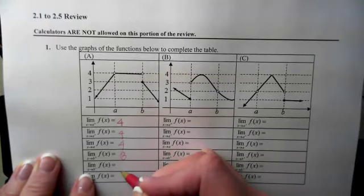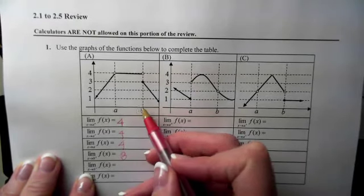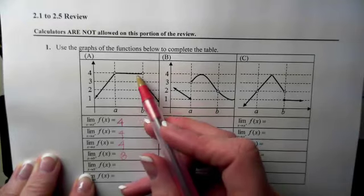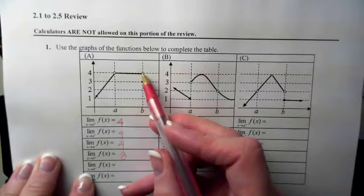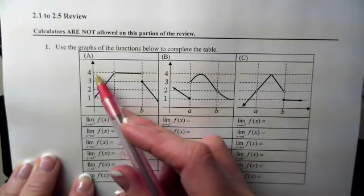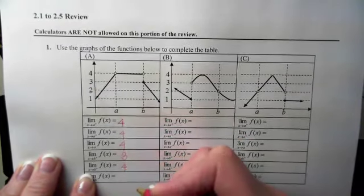If I want to approach B from the left side, I again locate B, move to the left, hop on the curve, and now I move along the curve until I'm over B. Notice this time that my Y coordinates are closer to 4. So my limit on that one would be 4.